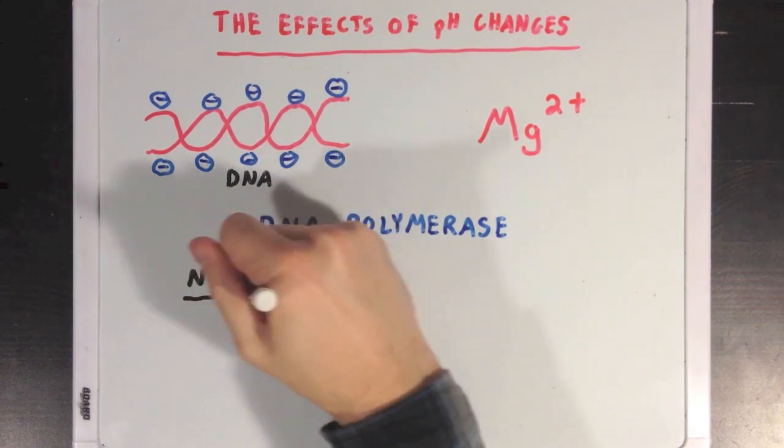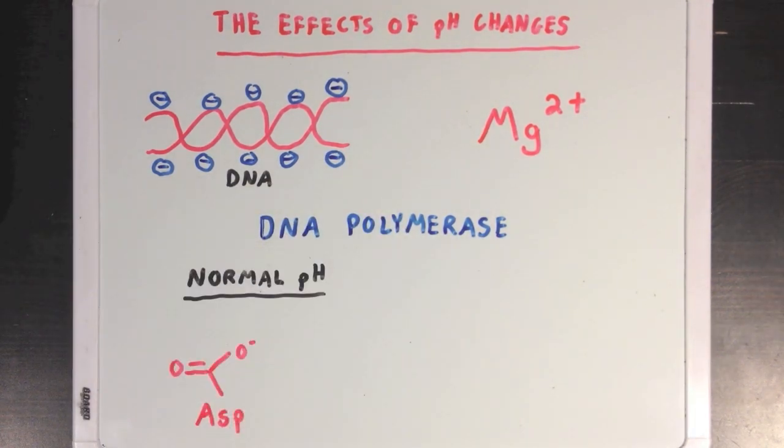Under normal pH conditions, the DNA polymerase will hold on to that magnesium ion through an electrostatic interaction between the magnesium and one of its aspartate residues, which would be deprotonated and thus negatively charged at neutral pH values.